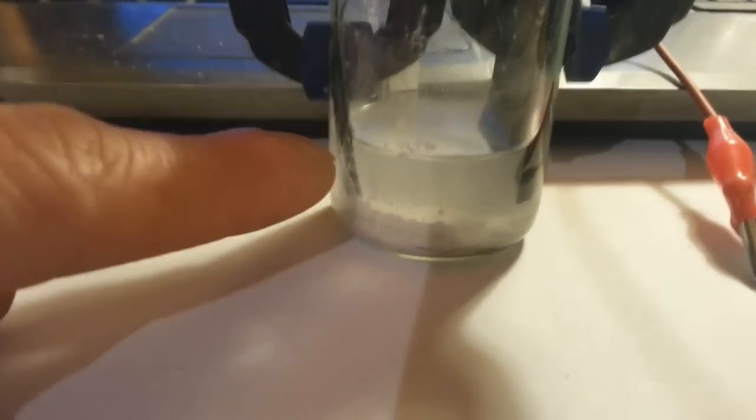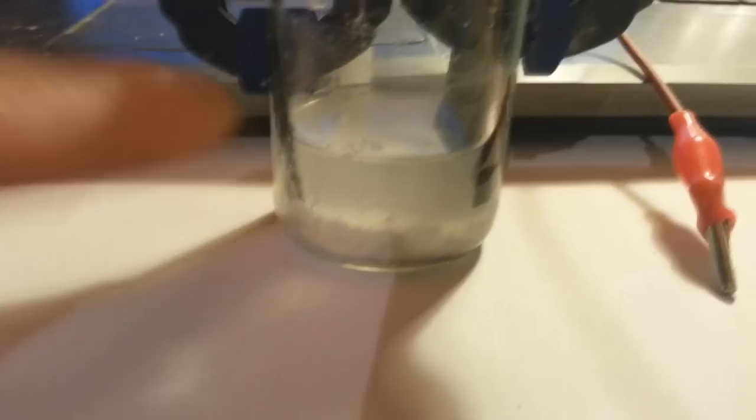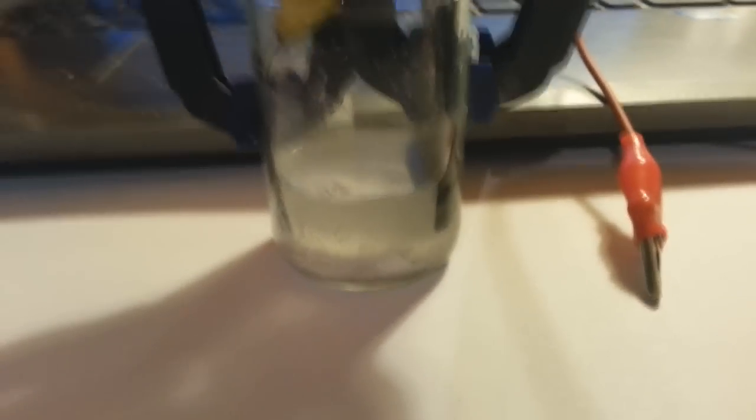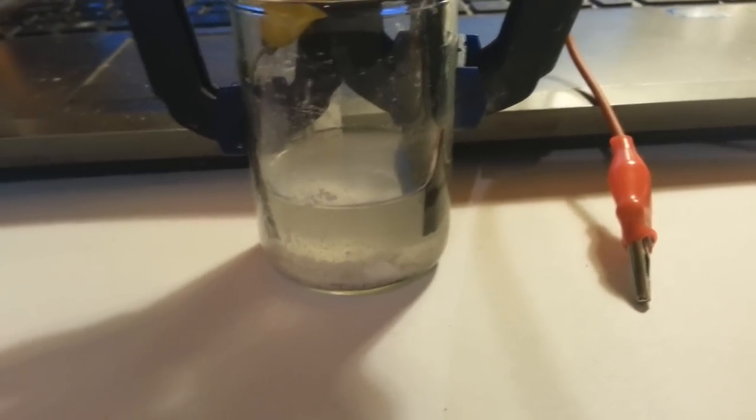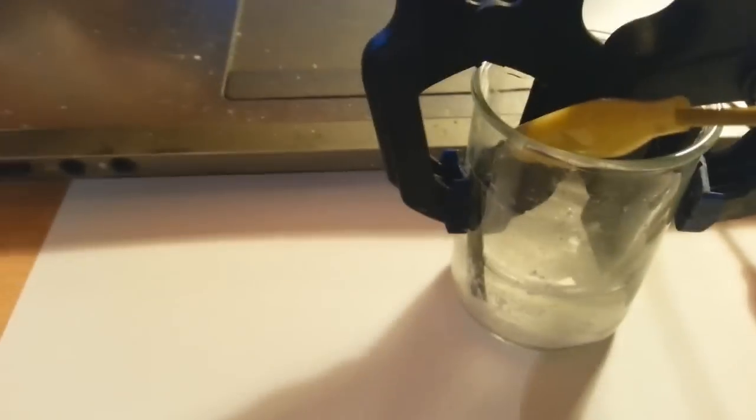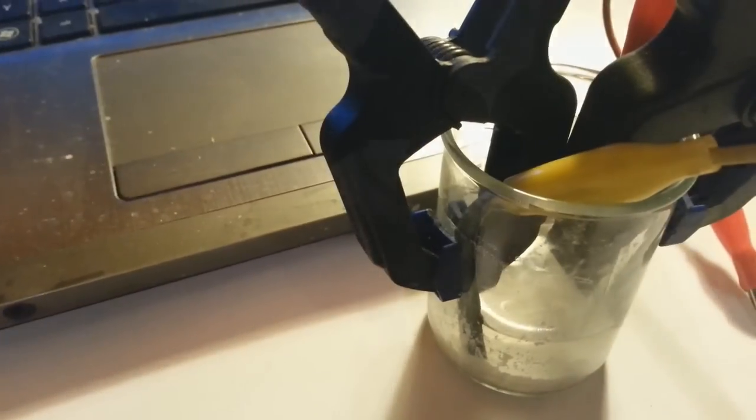Here you can see the zinc electrode in zinc oxide powder and graphite in electrolyte of sodium sulfate. I will measure the voltage, and right now the voltage is 1.3 volts.